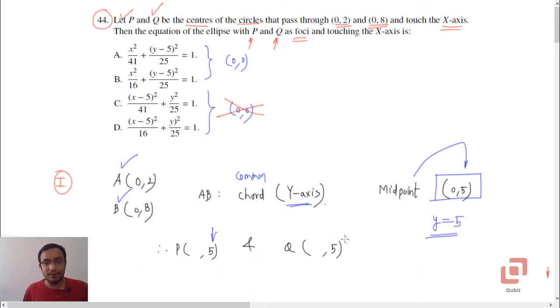So, we have successfully identified the y-coordinates of the points P and Q. Let's now go to the x-coordinates and because the circles touch the x-axis, we also got the radius of the circle. Both have the same radius that is 5 units.